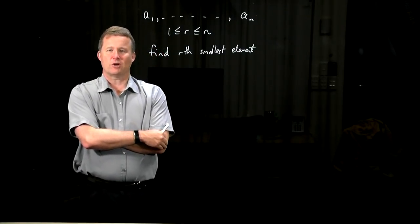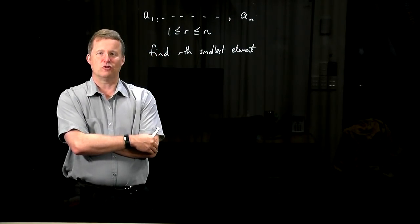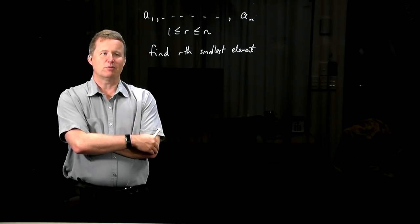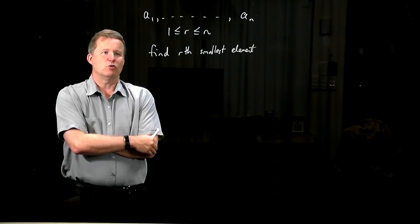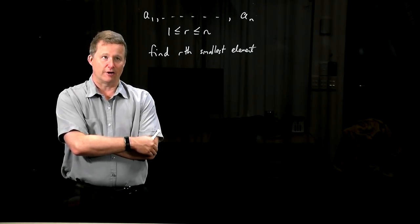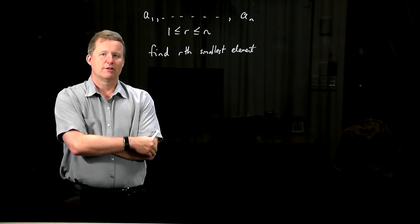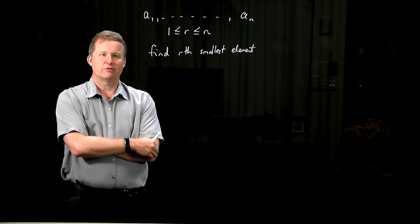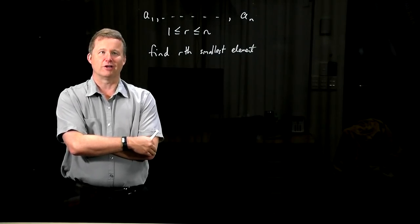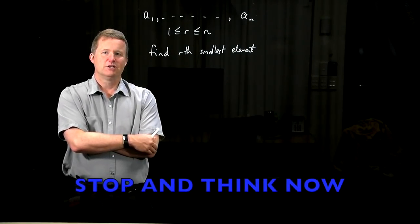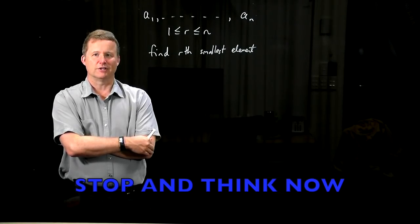So it's a good time to stop the video now and think for a few minutes how you would come up with a general procedure that would find the rth order statistic for an arbitrary r. Think about all the sorting algorithms we've had and particularly the way they were designed. Think about divide and conquer, for example - see whether there's a recursive way of doing this.